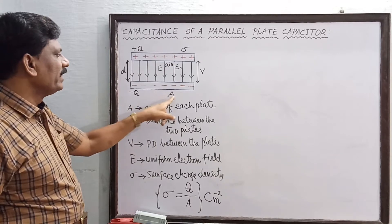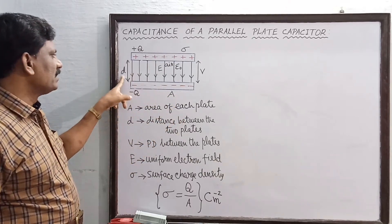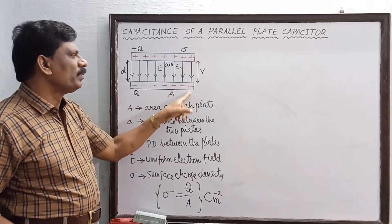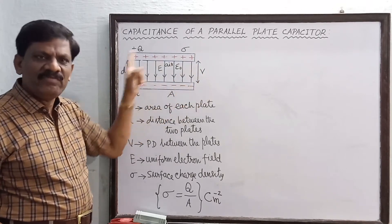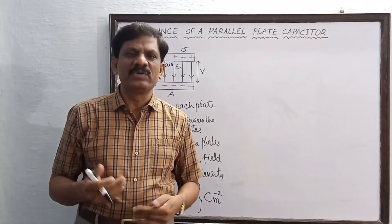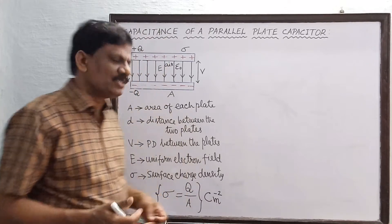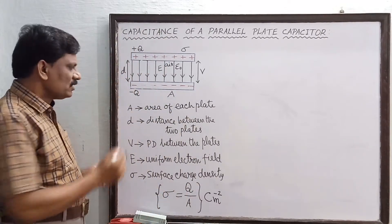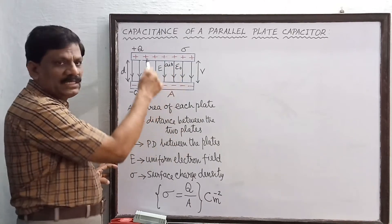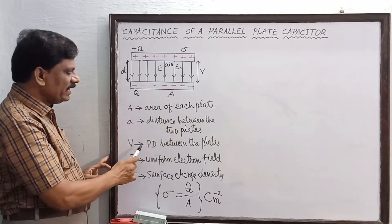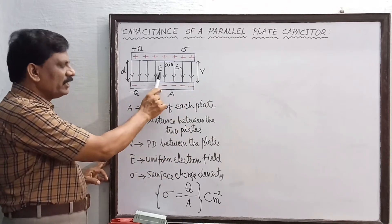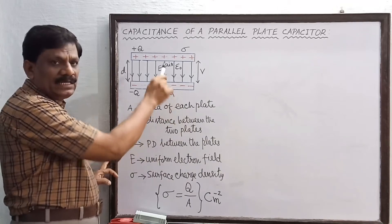Each plate has an area A, the distance of separation is d, the potential difference between the two plates is V, and the uniform electric field between the two plates is E. When deriving in the examination, list these points: A is the area of each plate, d is the distance between the two plates, V is the potential difference, and E is the uniform electric field.